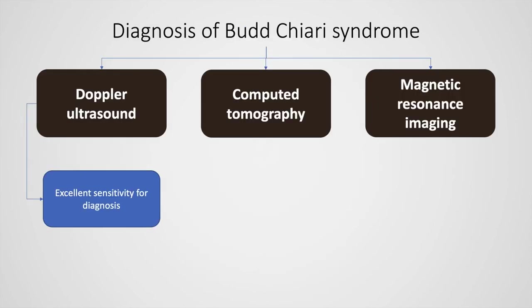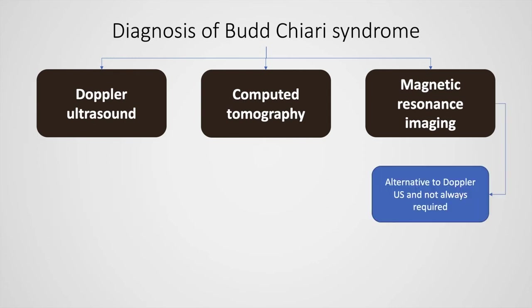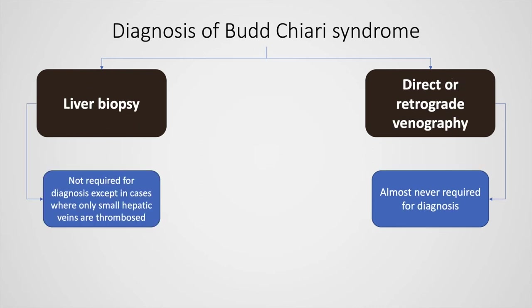There could also be marked nodular enhancement in the arterial phase with disappearance in the portal and late phases. Of the diagnostic modalities for Budd-Chiari syndrome, Doppler ultrasound has excellent sensitivity. MRI is an alternative and is not always required. Liver biopsy is not required for diagnosis except when only small hepatic veins are thrombosed, and direct or retrograde venography is almost never required.